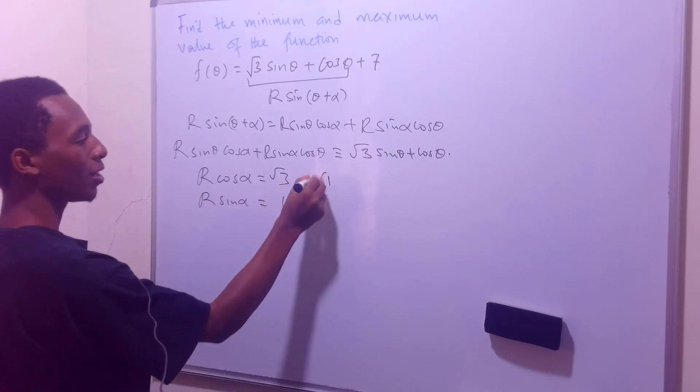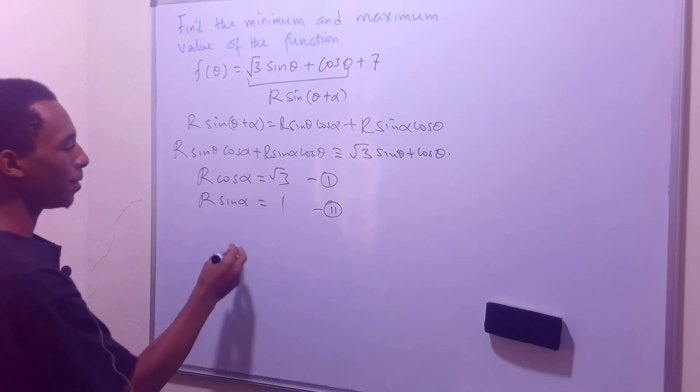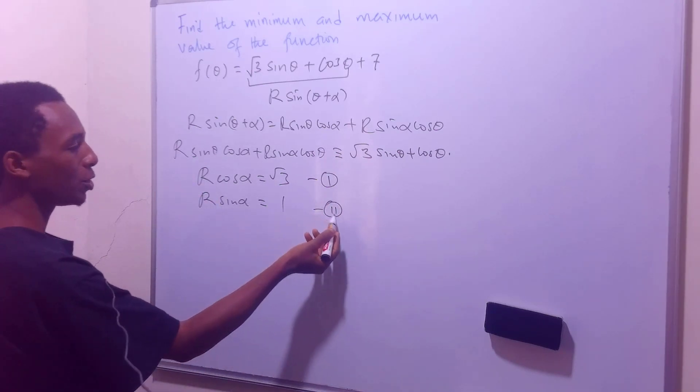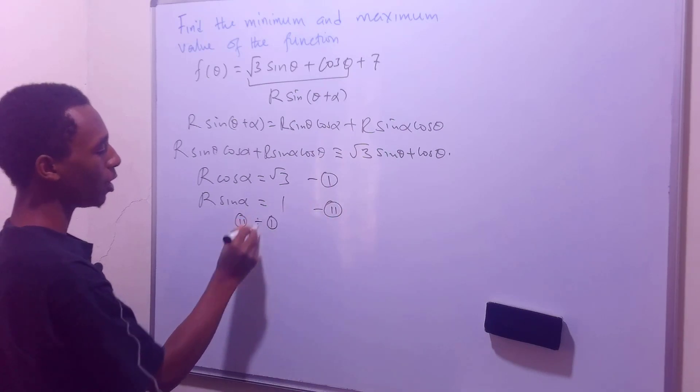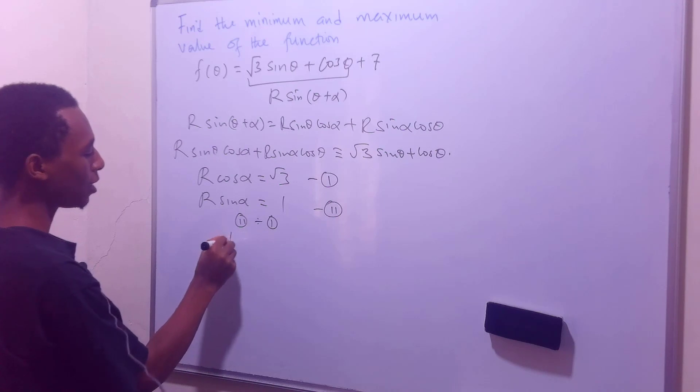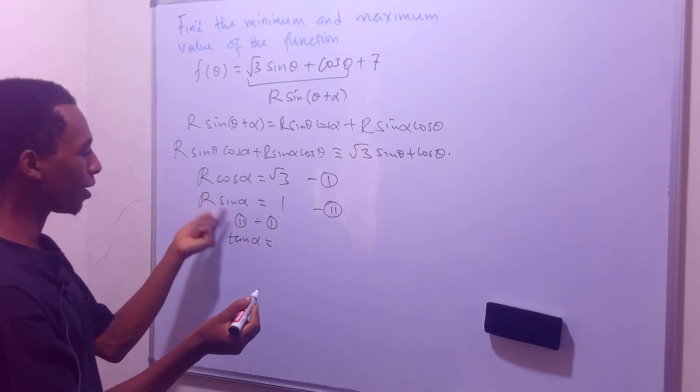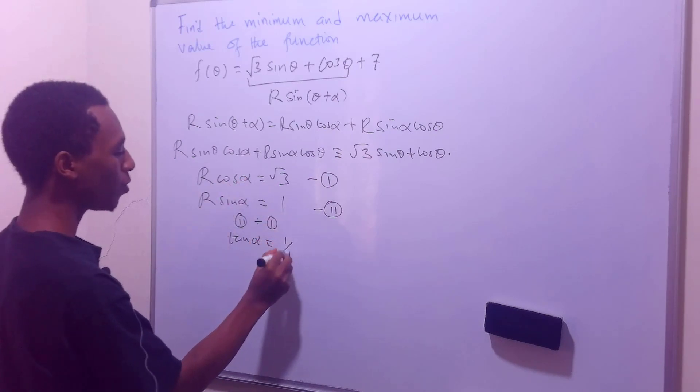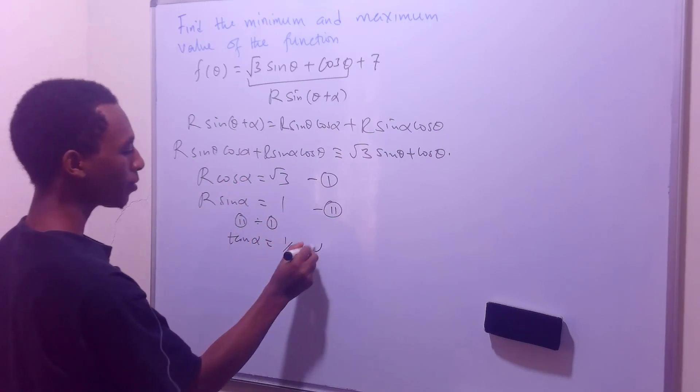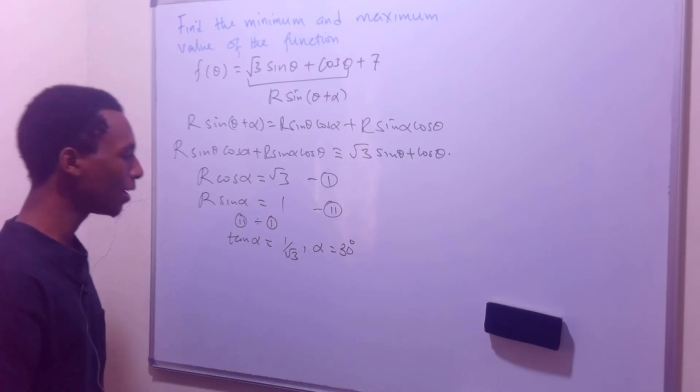So I can call this equation 1 and this equation 2. So let's say I take equation 2 divided by equation 1. So 2 divided by 1 will have tan(α). So r divided by r cancels, sin(α) divided by cos(α). That's going to be 1 over √3, which means alpha is just 30 degrees.